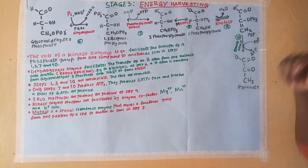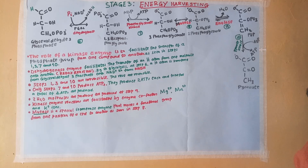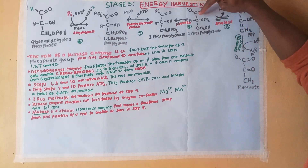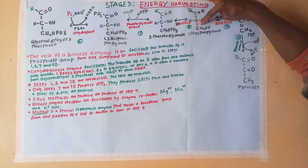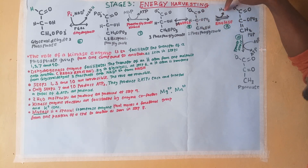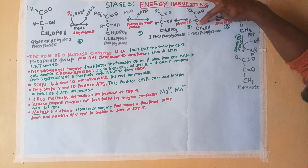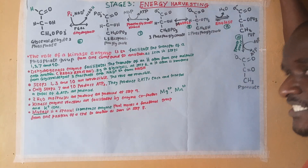Step 9 is facilitated by enolase enzyme. Enolase carries out a dehydration reaction, whereby it dehydrates the molecule between carbon number 2 and carbon number 3, producing a double-bonded compound. It combines the hydrogen atom from position 2 and a hydroxyl group to form water. The resulting compound has a double bond between C2 and C3, and is named phosphoenolpyruvate, that is PEP.